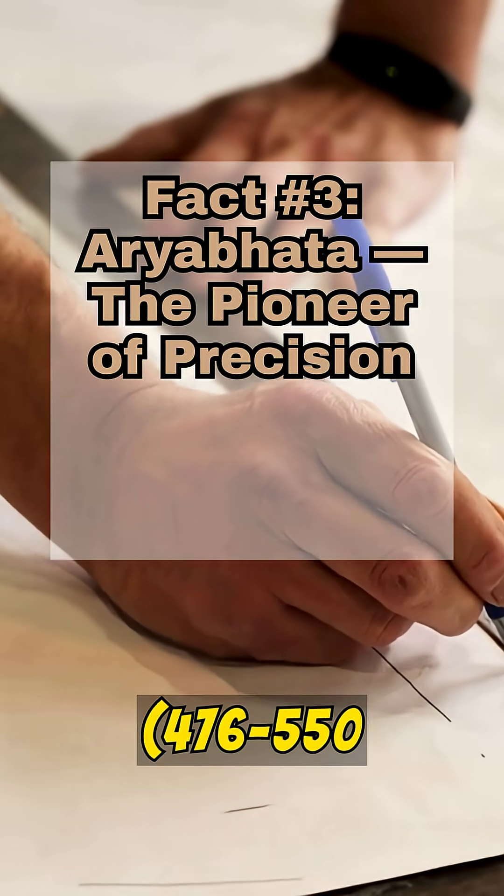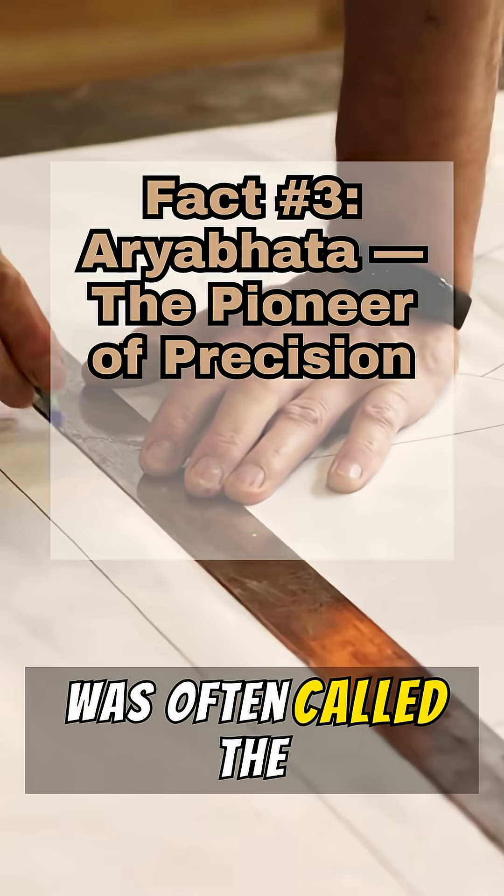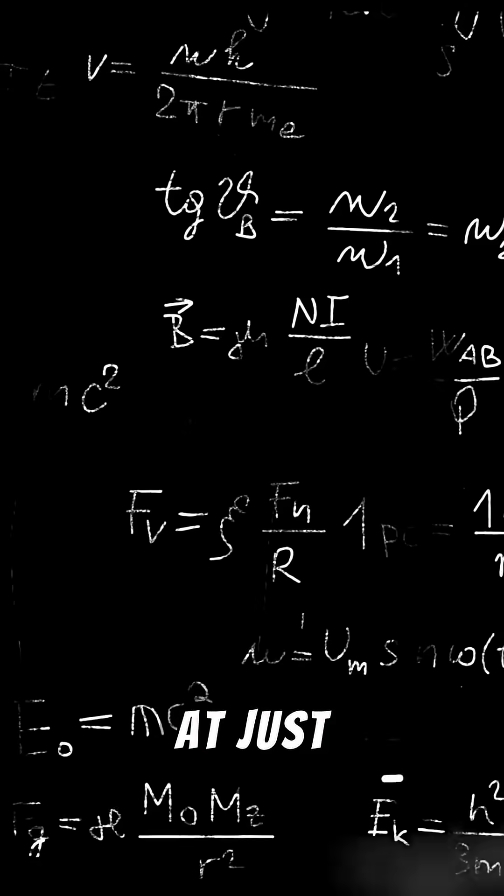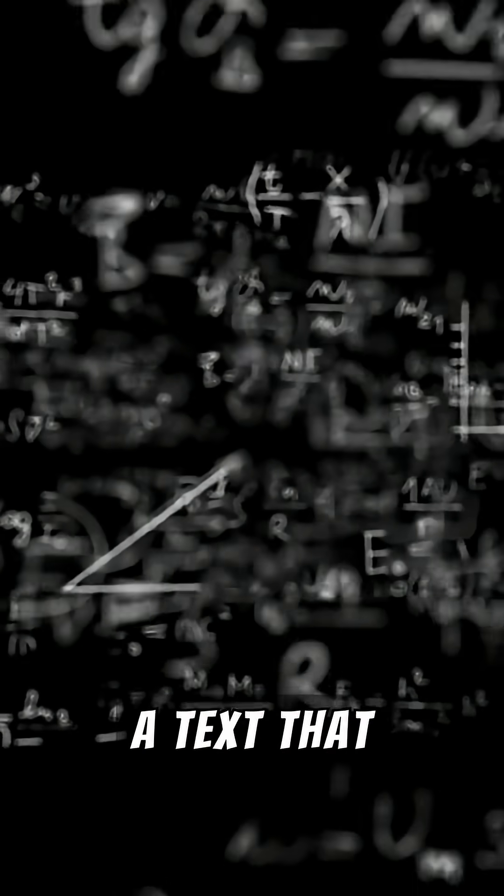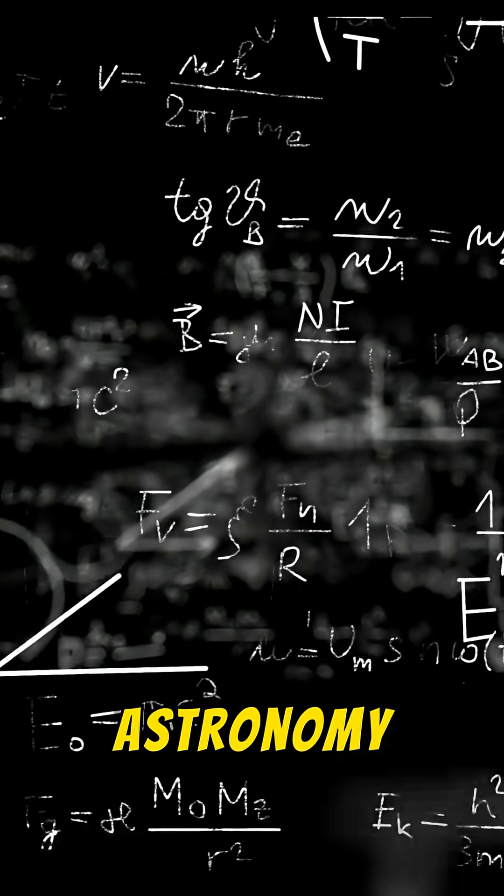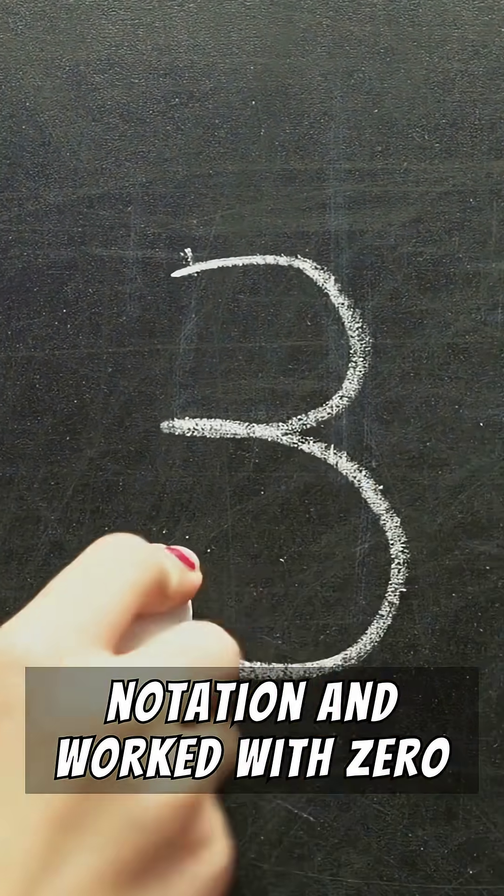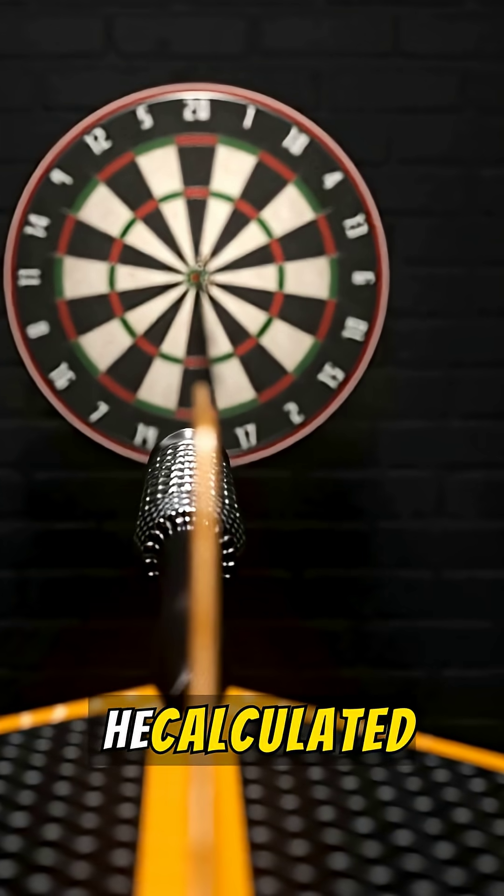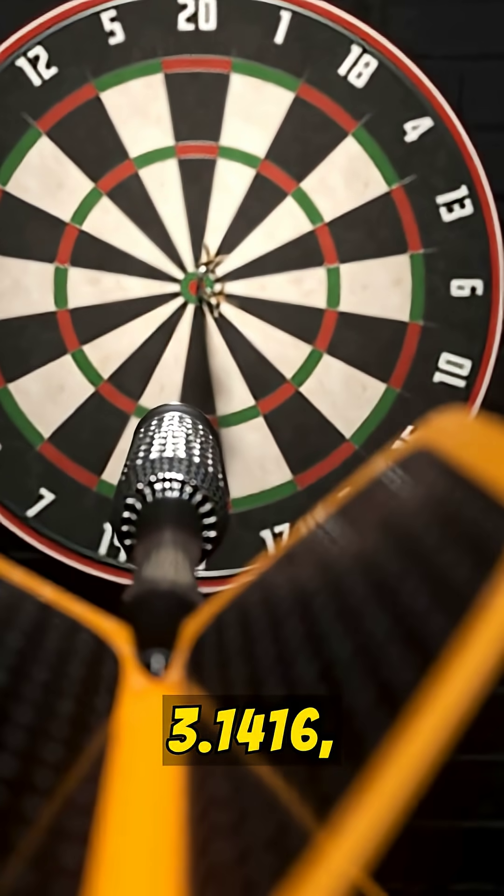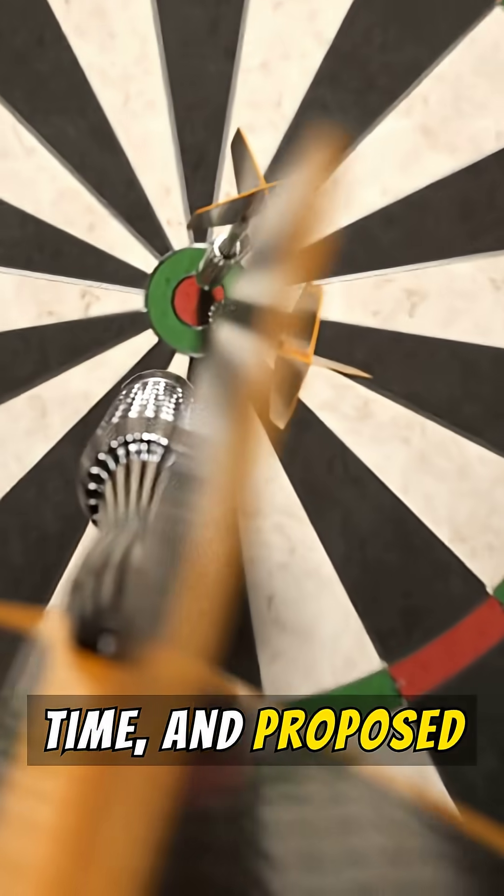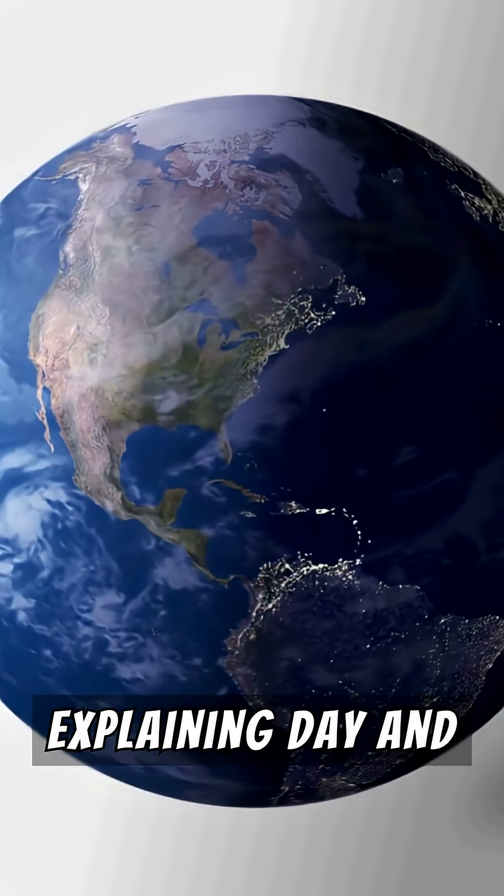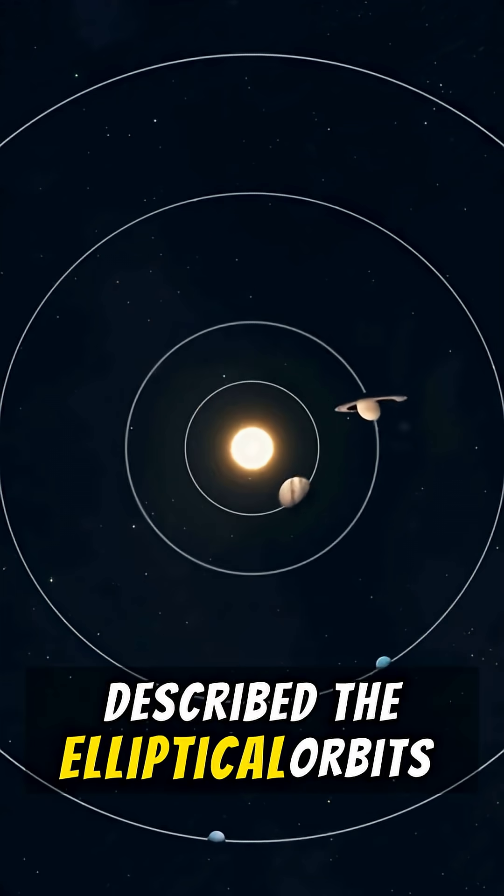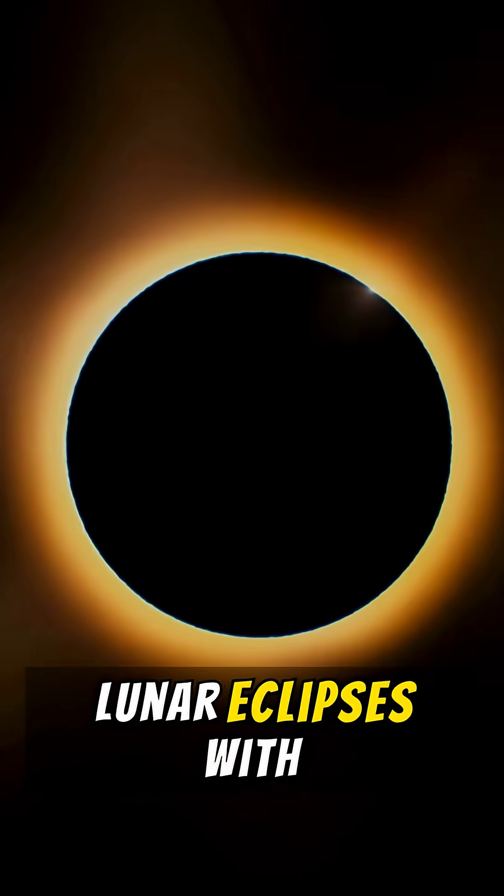Aryabhata, 476-550 CE, Indian mathematician and astronomer, was often called the pioneer of precision for his groundbreaking accuracy in scientific calculations. At just 23, he wrote the Aryabhatia, a text that revolutionized mathematics and astronomy. It introduced place-value notation and worked with zero as a number, laying the foundation for modern arithmetic. He calculated pi as approximately 3.1416, an astonishingly precise figure for his time, and proposed that the Earth rotates on its axis, explaining day and night, a concept centuries ahead of Western thought. His models described the elliptical orbits of planets and predicted solar and lunar eclipses with remarkable accuracy.